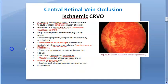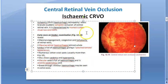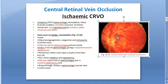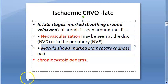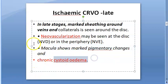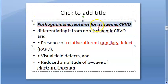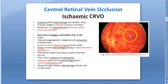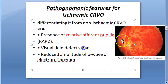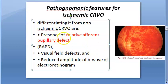You can also see vitreous hemorrhage in the early stage — all this bloody tomato ketchup appearance is still in the early phase of ischemic CRVO. In the late stage, new vascularization starts developing, and the macula will have pigmentary changes and chronic cystoid edema. The pathognomonic feature of ischemic CRVO differentiates it from non-ischemic CRVO.